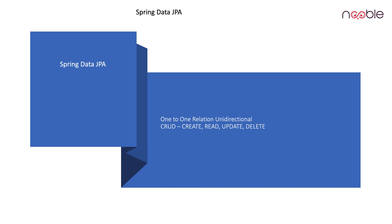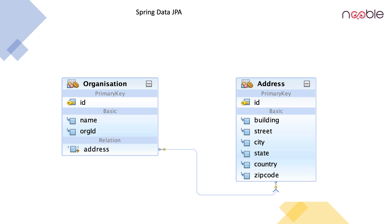Let us start by modeling your entities. Here we are having two entities, the organization and address. One organization, one address — so it is a one-to-one relation. That is the reason why I have chosen these two entities. We can see that the relation to address is defined in the organization entity, while we do not refer to the organization in the address entity. That is the reason why we call them unidirectional.